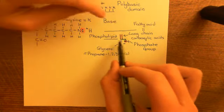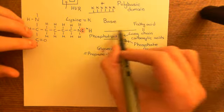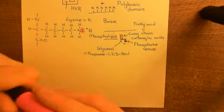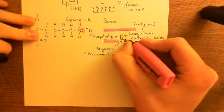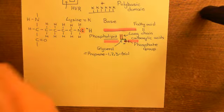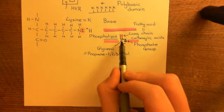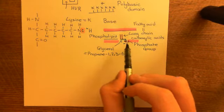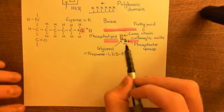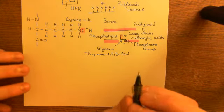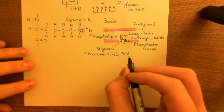Both sides of the membrane — the innermost and outermost faces — are basically centres of negative charge because of the phosphate groups of the phospholipids. Now you can understand why having this polybasic region, which is positively charged, is going to help KRAS-4B associate with the phospholipid bilayers.